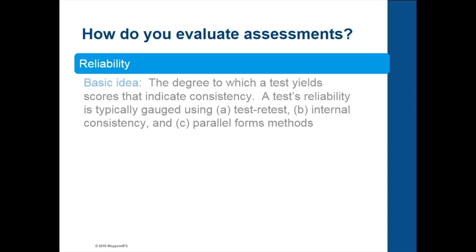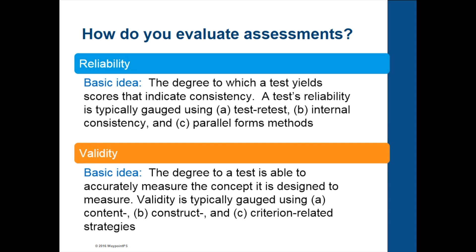So how do you go about evaluating assessments for their quality — whether it's a good or bad test? There are two basic approaches: one is reliability, the other is validity. These two ideas are fairly involved, so I'll have separate videos for each. But suffice to say, reliability of a test is the degree to which a test yields scores that are consistent. There are three main ways to gauge reliability: one is test-retest, another is internal consistency, and the third is parallel forms. Test-retest just means that if you were to take the assessment in May of 2016 and take the same test six months later in November of 2016, the scores should be fairly similar and give you a consistent result over that time period.